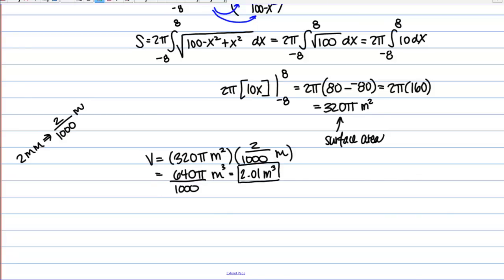So here we simply found the surface area of the surface that was described to us and then to find the volume of paint we multiply that surface area by an extra dimension, the thickness of the paint.